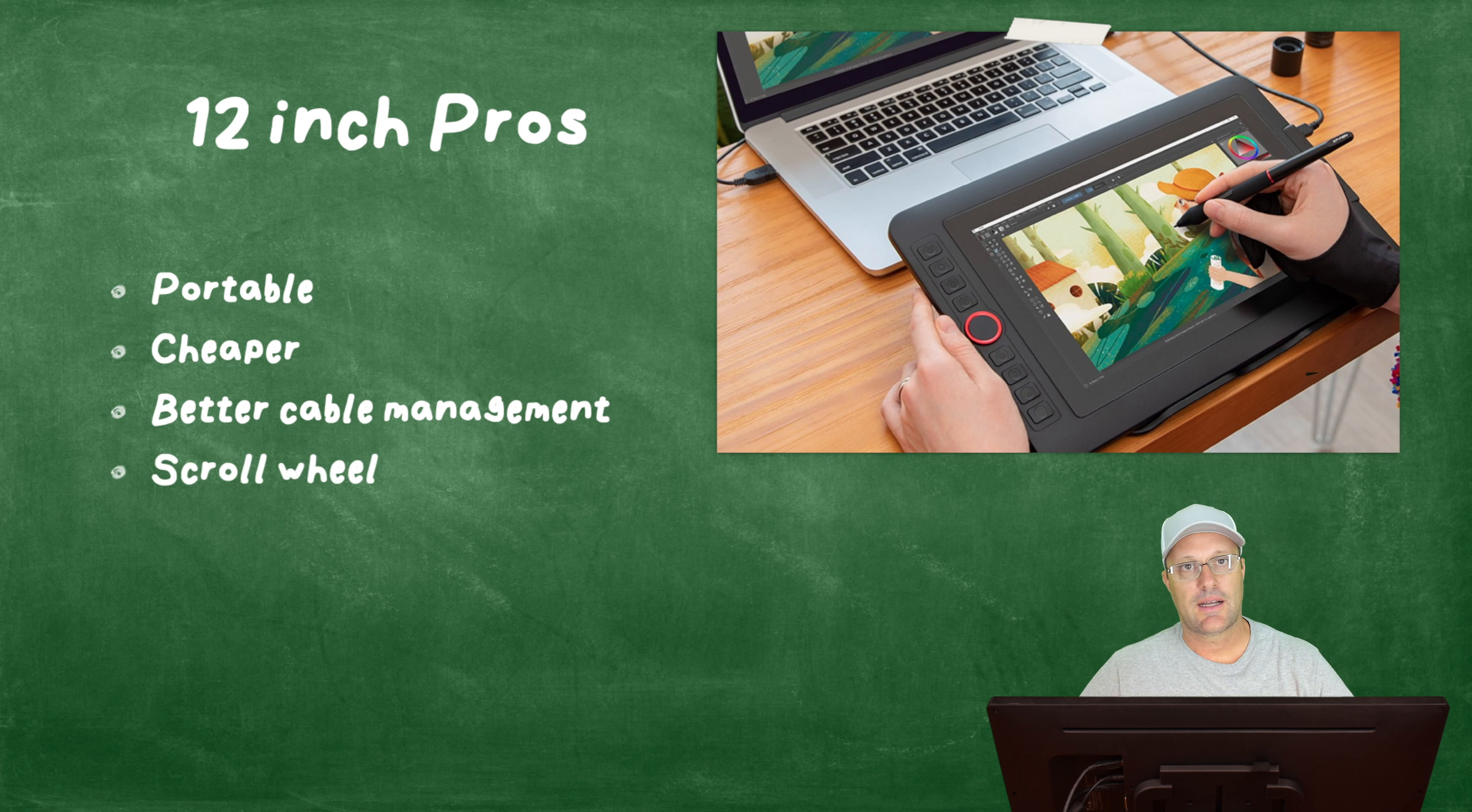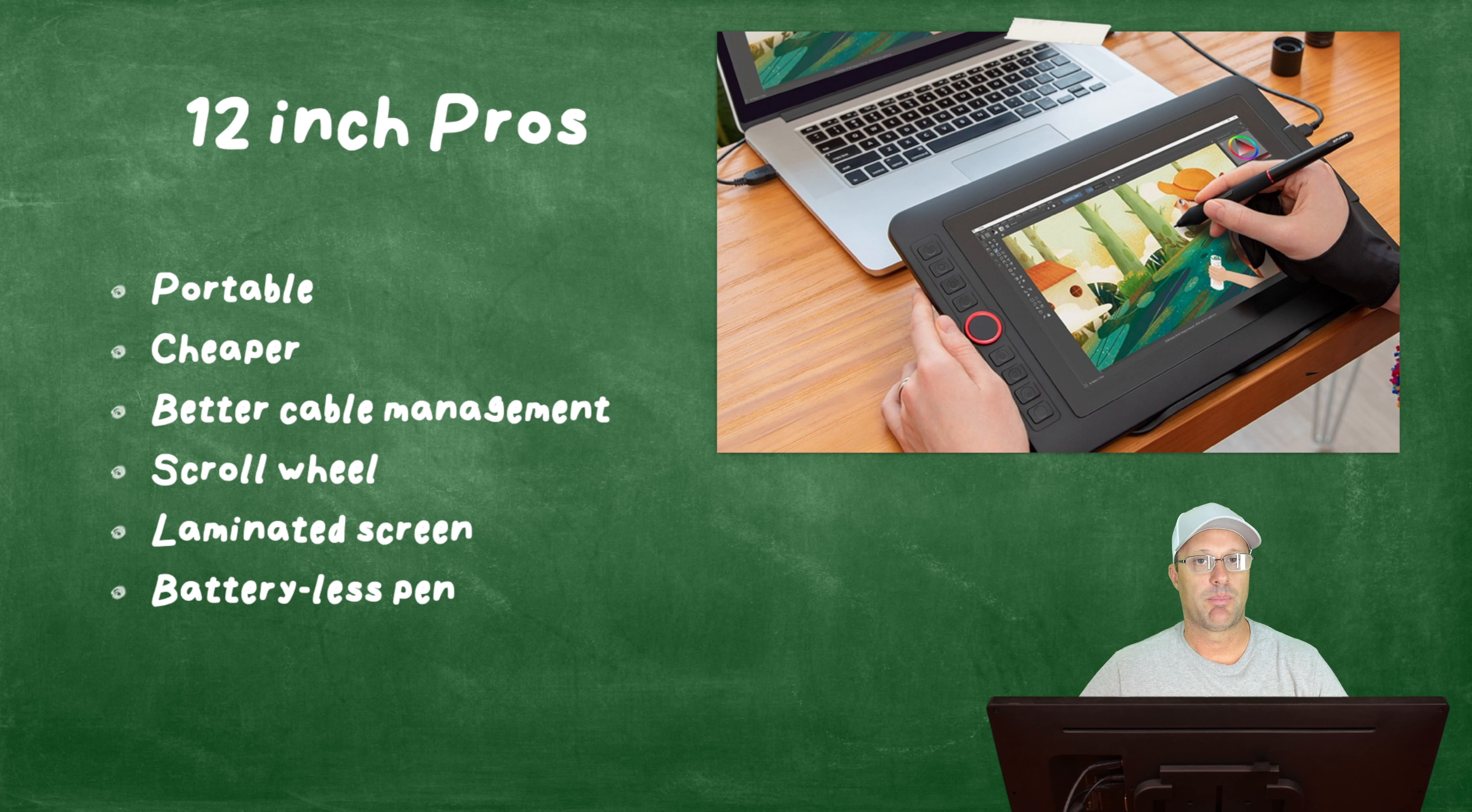It does have the scroll wheel, which I use but I don't use it all the time. I don't want to get too used to using it because when I switch back over to my 22 inch model, which doesn't have the scroll wheel, I don't want to be reaching for something that's not there. The Pro model has the laminated screen, so your pen gets closer to the actual pixels, and the 22 inch model does not. That's definitely a plus. The pen that it comes with doesn't have a battery so you don't have to charge it.